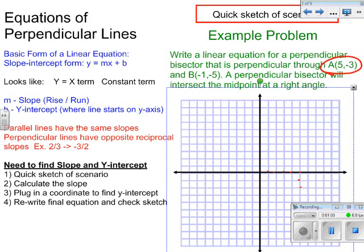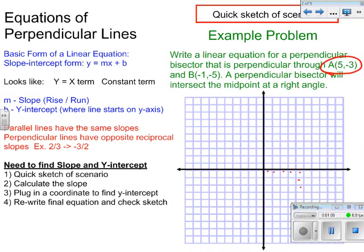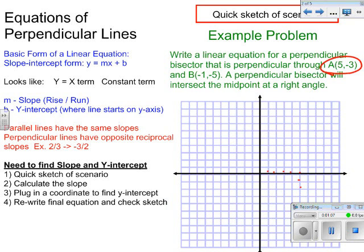So we've got A, which is at 5, negative 3. So you've got to go over 5, down 3. And B, which is negative 1, negative 5. Make sure when you plot both of these points, always label the letter and the coordinate. This helps you reduce errors, and also it's very useful for when you're finding the rise and run.